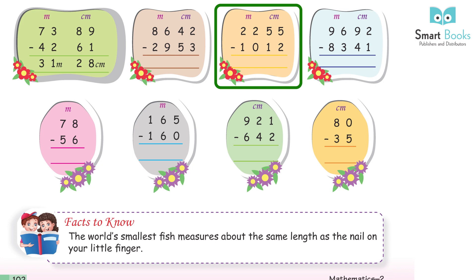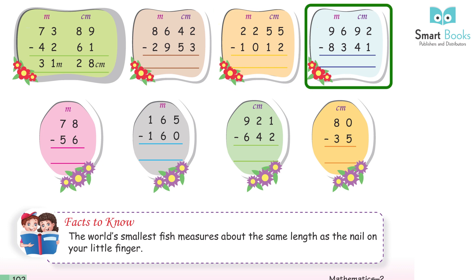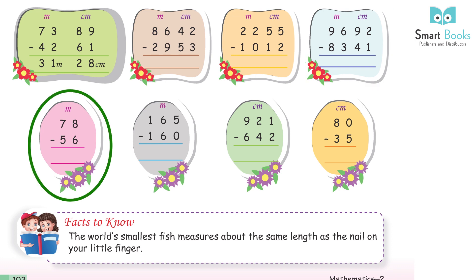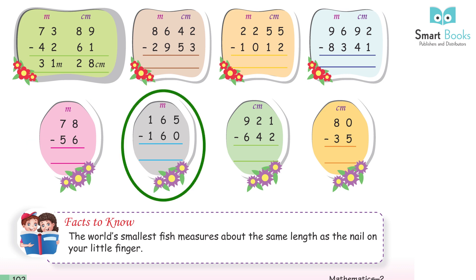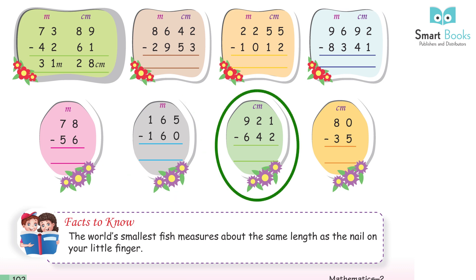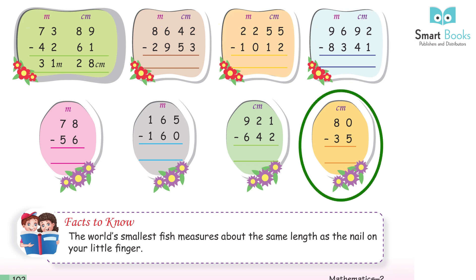86 m 42 cm − 29 m 53 cm = 56 m 89 cm. 22 m 55 cm − 10 m 12 cm = 12 m 43 cm. 96 m 92 cm − 83 m 41 cm = 13 m 51 cm. 78 m − 56 m = 22 m. 165 m − 160 m = 5 m. 921 cm − 642 cm = 279 cm. 80 cm − 35 cm = 45 cm.